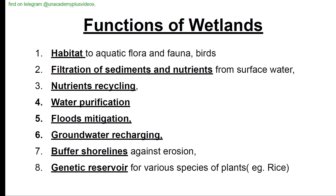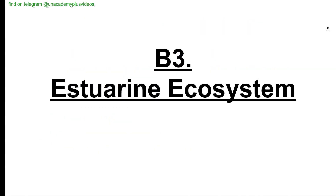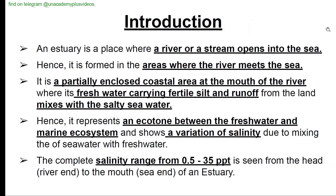Functions of wetlands: habitat for aquatic flora, fauna, and birds; filtration of sediments and nutrients from surface water; nutrient recycling; water purification; flood mitigation; groundwater recharging; buffering shorelines against erosion; and serving as a genetic reservoir for various plant species such as rice. Estuarine ecosystem introduction: an estuary is a place where a river or stream opens into the sea.